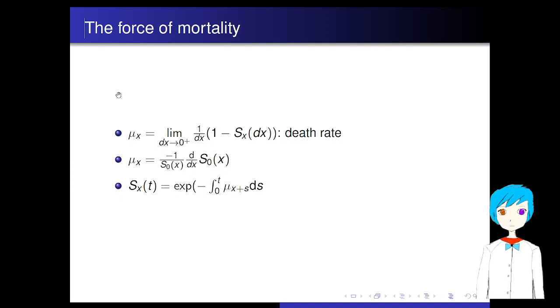The force of mortality is like the death rate. Its definition is the opposite number of the derivative of S_0(x) dx. It can be represented as minus 1 over S_0(x) times d/dx S_0(x). So it's just the death rate, and the survival probability S(t) can be expressed as the exponent e to minus the integration of the death rate. So this is the survival probability for at least another t years. Thank you.